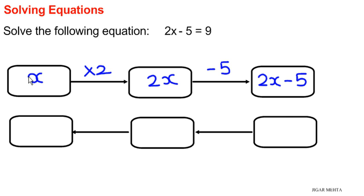So starting with 9 because 2x minus 5 is given as equals to 9. Now opposite of negative 5 right here. So opposite of minus 5 or subtraction of 5 is addition of 5.